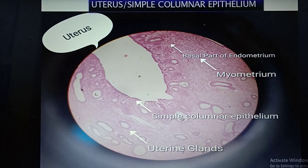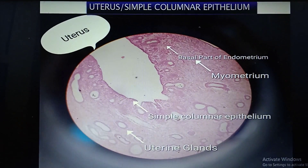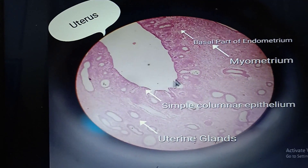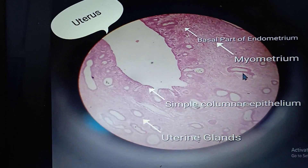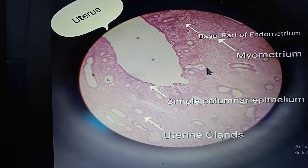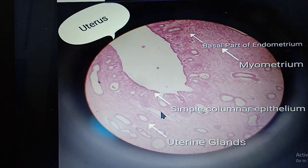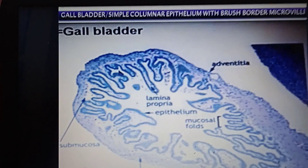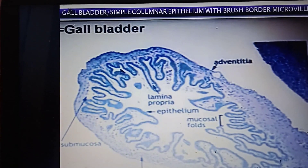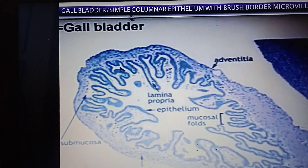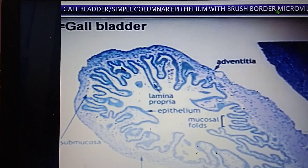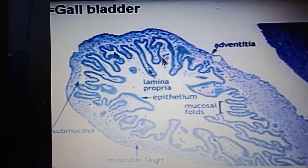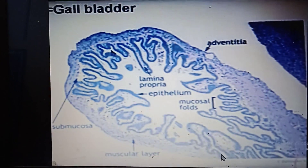This is the uterus showing simple columnar epithelium with glands, ducts, and blood vessels. Now this is the gallbladder — but if it is not in your syllabus and you have only covered epithelium, you have to write simple columnar epithelium with brush border microvilli. This is simple columnar epithelium having brush border microvilli with a flimsy mucosal fold.